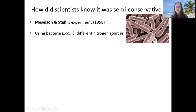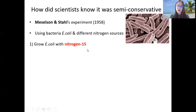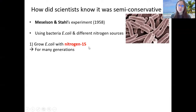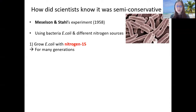Now, nitrogen actually has two different isotopes. One is nitrogen-15 and one is nitrogen-14. Nitrogen-14 is more commonly found; nitrogen-15 is less common. What these two smart fellows did was use E. coli and grow it for many generations in nitrogen-15, which is the heavier isotope — nitrogen-15 is heavier than nitrogen-14.